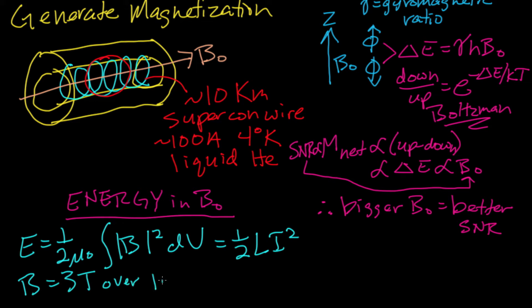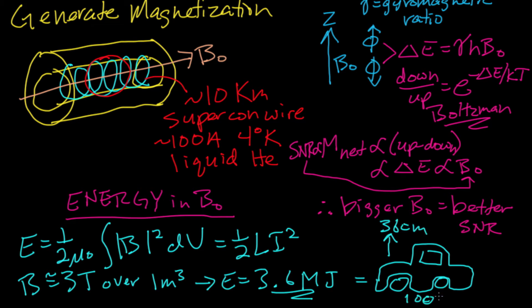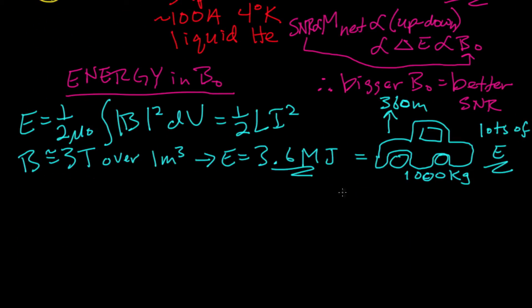If you have a three Tesla scanner, and you're asking the scanner to produce three Tesla over about one cubic meter, the energy that's sitting in that field is about 3.6 megajoules, which is the amount of energy it takes to lift a 1,000 kilogram car 360 meters up in the air. That's a lot of energy. What the system engineer has to do is to figure out what to do with all that energy in the event of a quench.